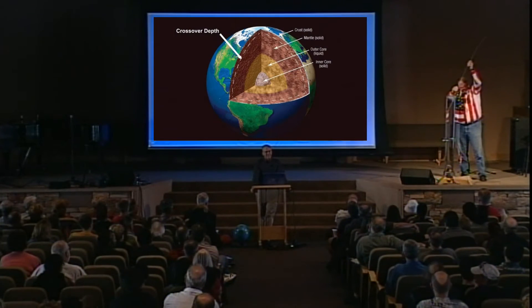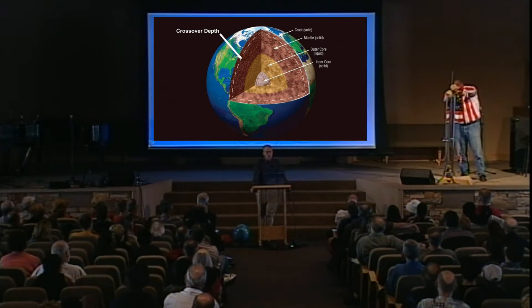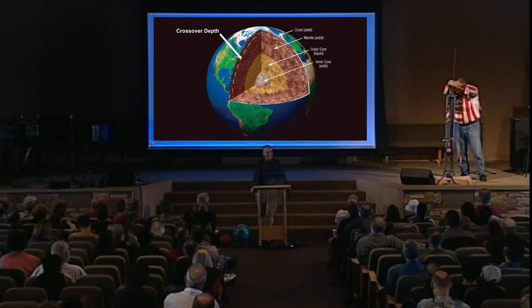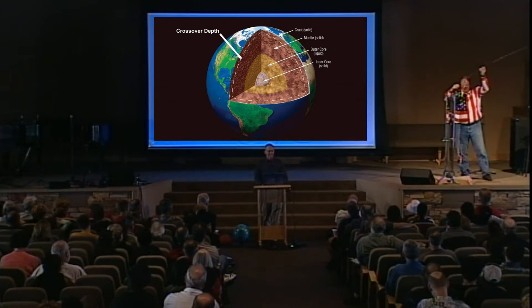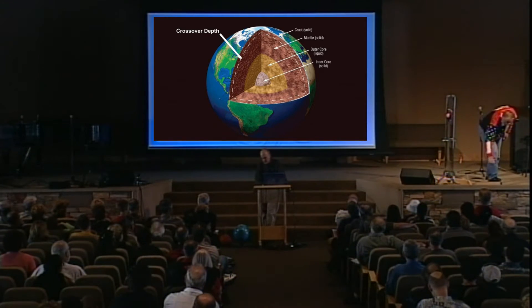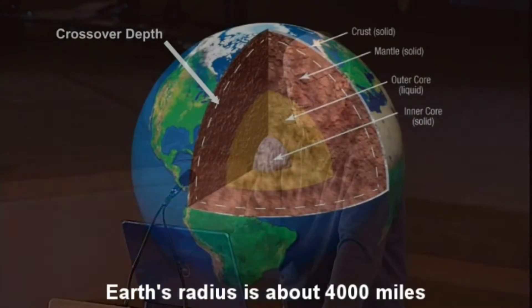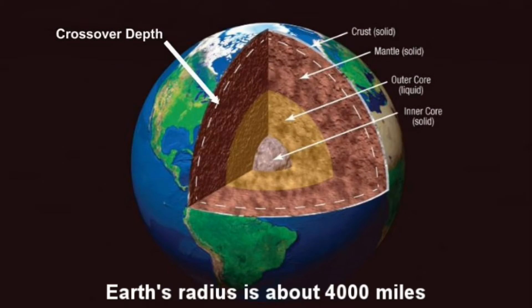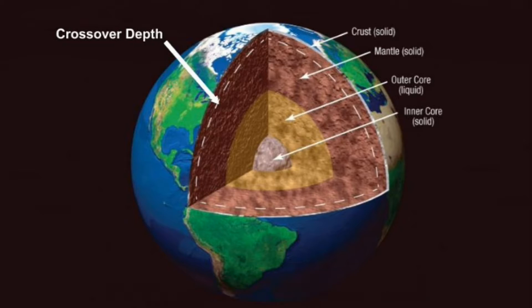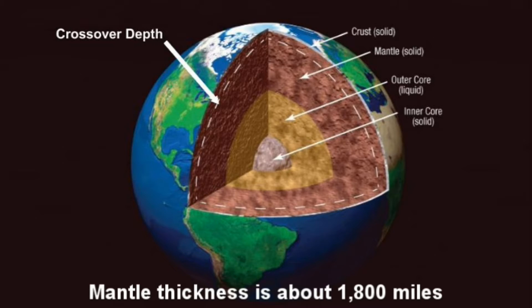That demonstration is really important — not as important as knowing Jesus, but it's going to be important for our discussion from here on. Now, a little more science class. Earth's radius is about 4,000 miles, and the mantle thickness is about 1,800 miles.